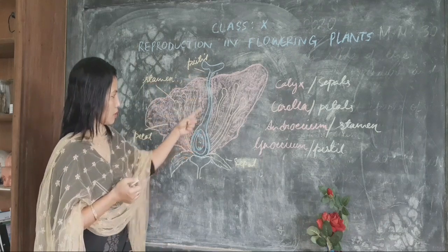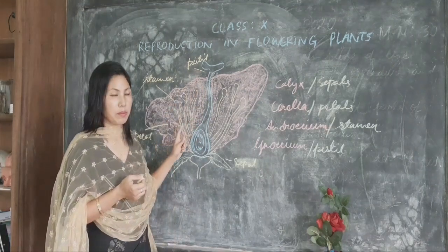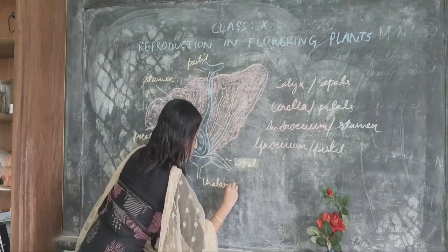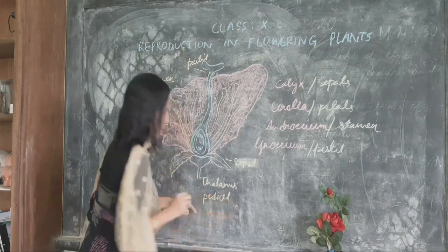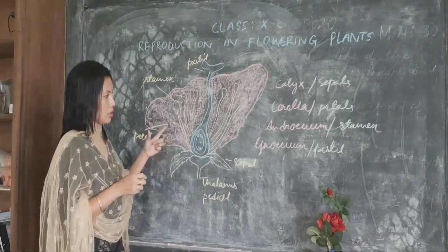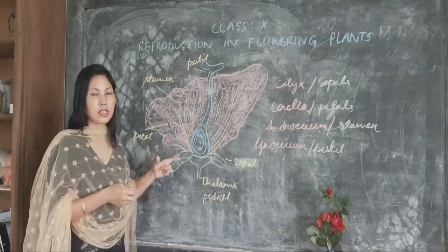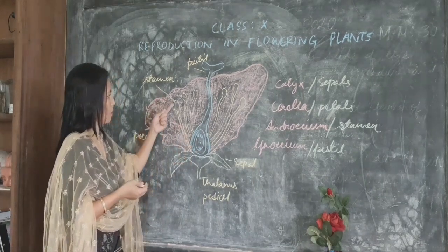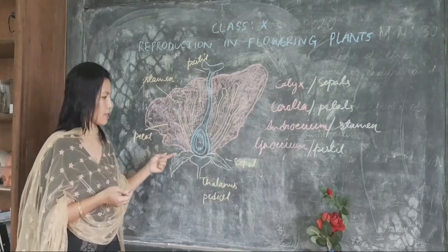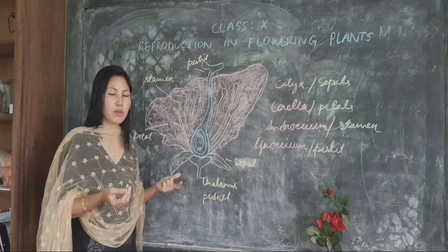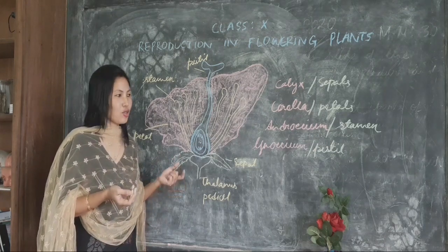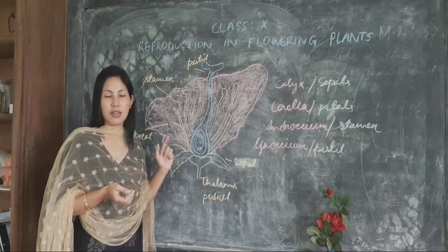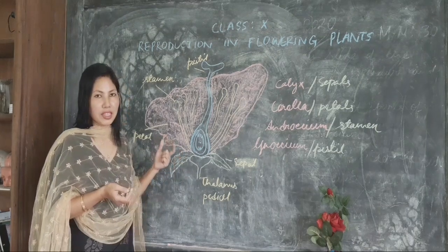The blue structure in the diagram is the pistil or gynoecium. These four major parts are attached to a common base called the thalamus, also known as the receptacle. The pistil, being the female reproductive structure, will produce the female gamete, and the stamen will produce the male gamete. The petals and sepals also play some role in the process of reproduction.